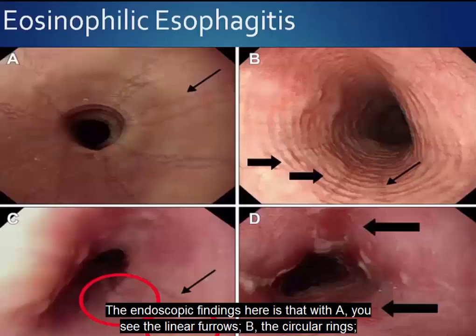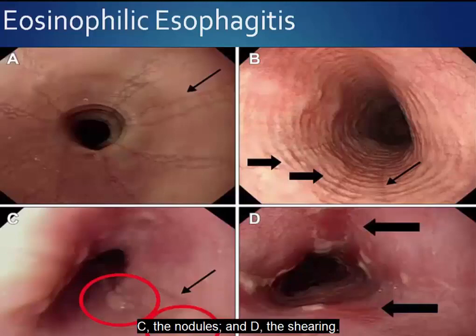The endoscopic findings here are: A, the linear furrows; B, the circular rings; C, the nodules; and D, the shearing.